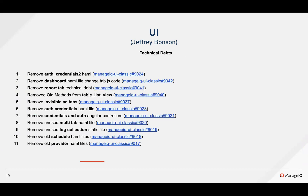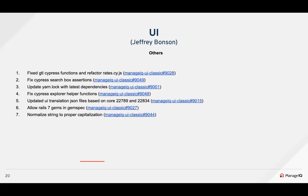Gilbert identified a lot of code and files that remained unused, mostly after certain pages were converted to React components. This cleanup involves the removal of HML files from modules like odd credentials, multi tabs, log collections, schedule, and provider pages. He also removed unused methods and tabs that were no longer being used.